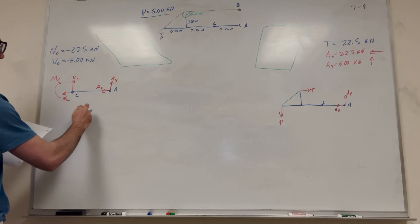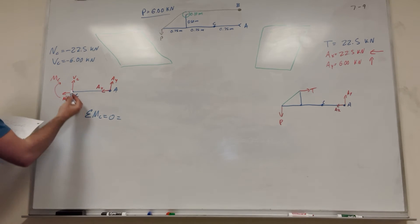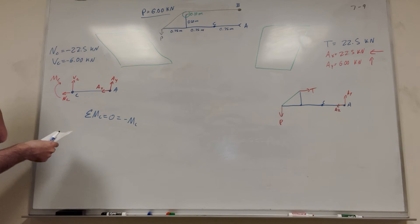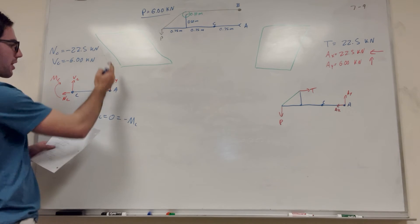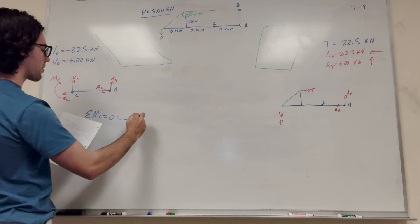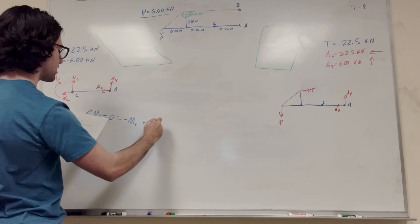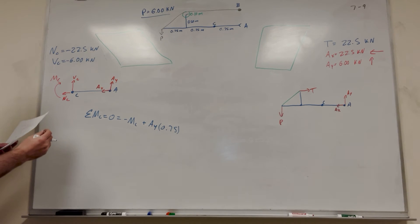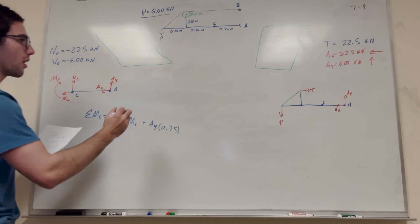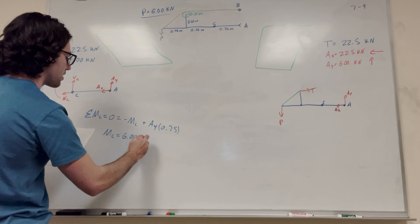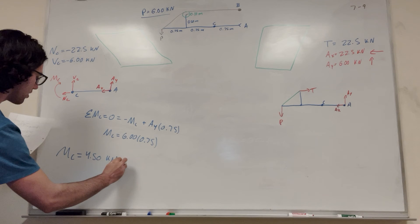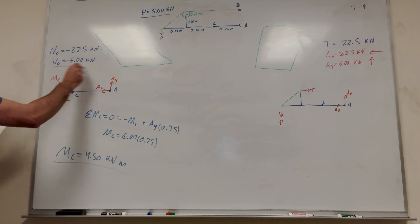And then lastly, we've got to take the sum of the moments at C. So if we're taking the sum of the moments at C, we're going to have the moment of C, of course. And that's pushing counterclockwise. So it's negative M_c. And then, let's think. So if we're taking it here, we're going to have to consider A_y. So A_y is the only one that's going to cause a moment around C. So A_y is going to push counterclockwise. We're going to add A_y times its distance, which is 0.75. So we'll move M_c over. M_c is equal to A_y, which is 6, times 0.75. And then you're going to get that moment of C is equal to 4.50 kilonewton-meters. And there you go.